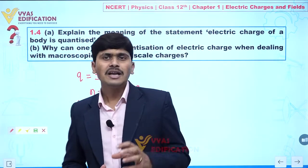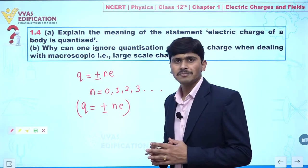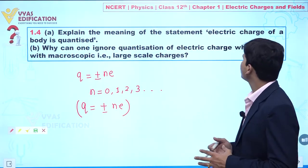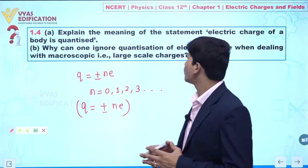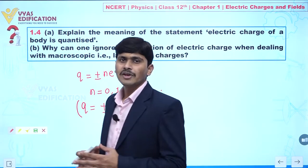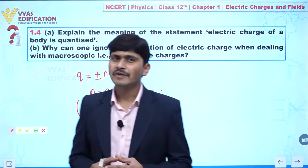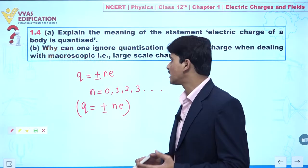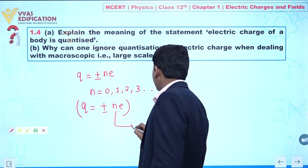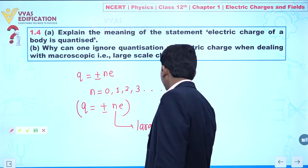But, what will happen if we talk about the statement number B, why can one ignore quantization of electric charge when dealing with macroscopic or large scale charges? So, actually, what will happen, whenever we are dealing with large scale charges, we can say value of n, this becomes very large.